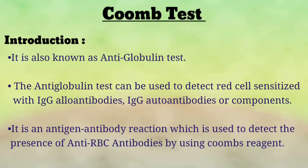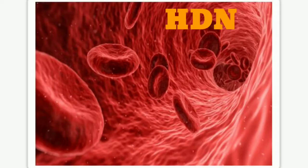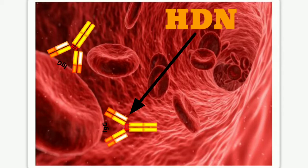Introduction of the Coombs Test: it is also known as the anti-globulin test. The anti-globulin test can be used to detect red cells sensitized with IgG allo-antibodies, IgG auto-antibodies, or its components. For example, if HDN — hemolytic disease of newborn — occurs, the immune system makes IgG antibodies against it. These antibodies attach to red blood cells; that is called red cells sensitized with IgG.